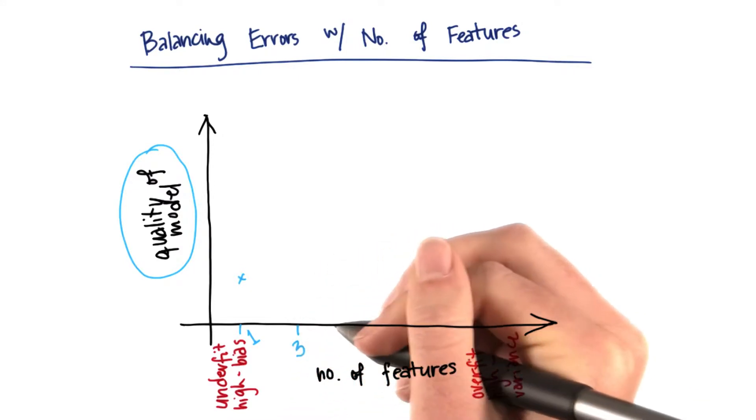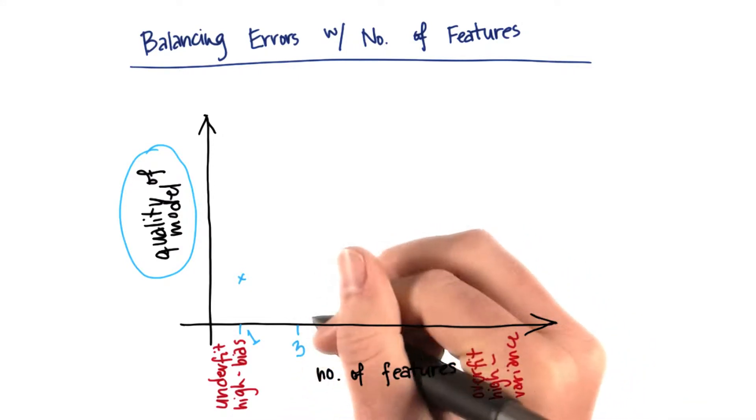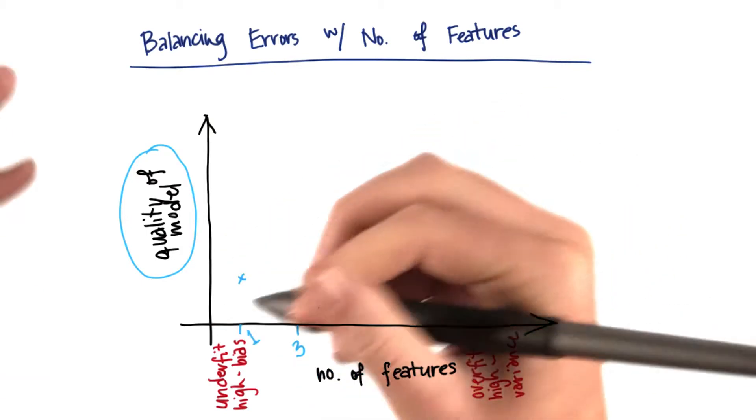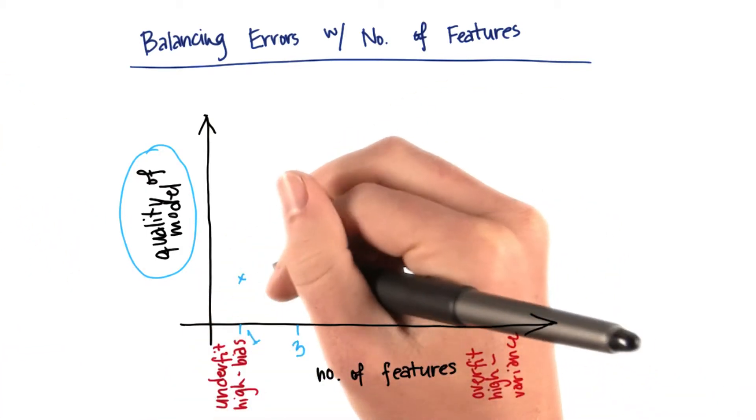Now let's suppose that I allow a little bit more complexity into my model. I allow it to use three features, and I happen to pick three features that are good at describing the patterns in the data.